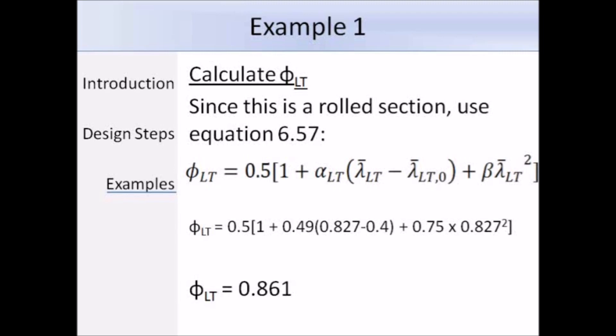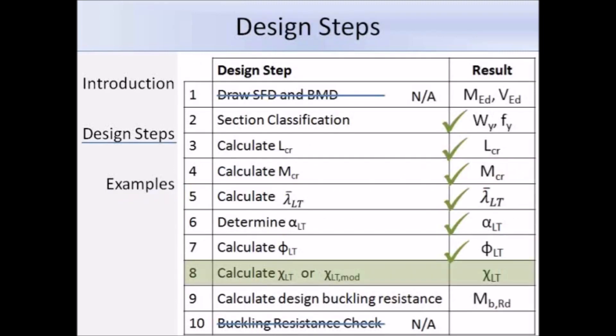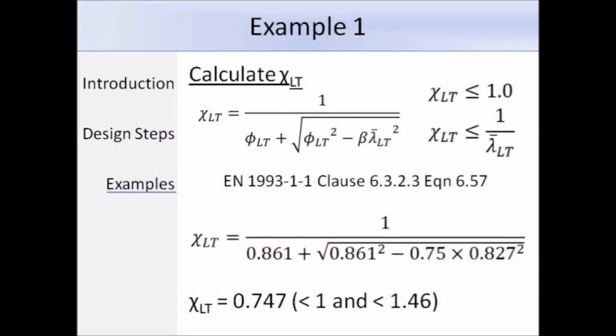The next step then is to work out chi LT. Again, we're dealing with the special case, and we need to use this expression. So we've already worked out phi LT is 0.861, and lambda bar LT is 0.827. The UK National Annex recommends that beta equals 0.75. So putting in these values, chi LT works out as 0.747. That's less than 1, and less than 1 over lambda bar LT, which is 1.46. So it meets those conditions.